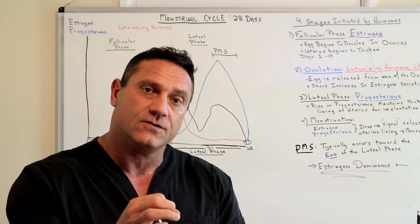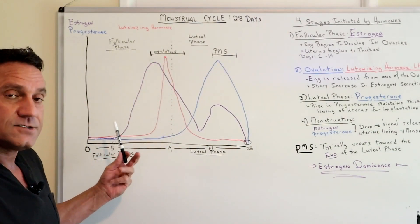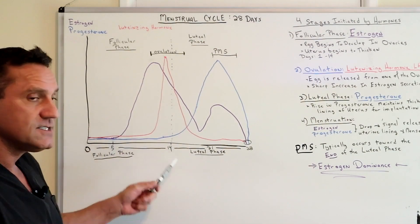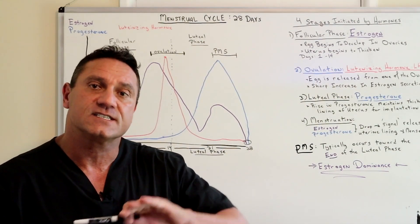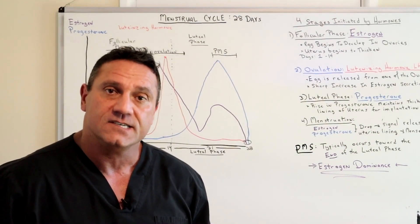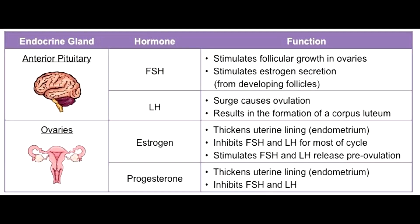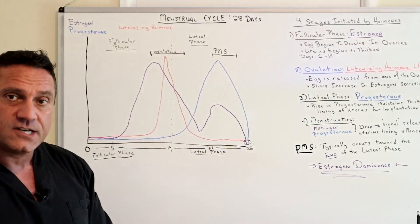And also the uterus begins to thicken. So you have days 6 through 12, estrogen skyrockets about 10 to 12 times in the female system to build up this uterine lining. Remember, the function of estrogen is for cell replication. So you got this tremendous surge and roughly about day 12, ovulation occurs.